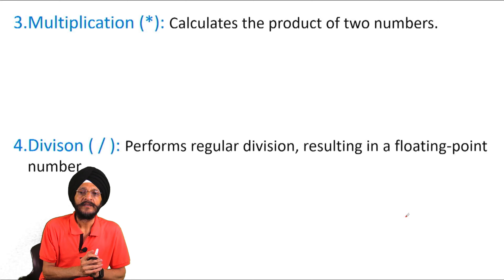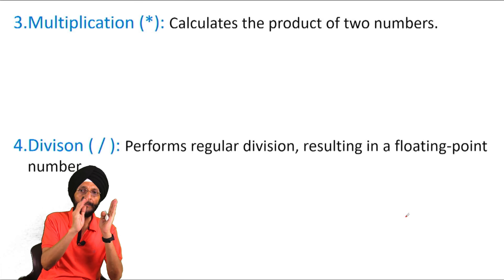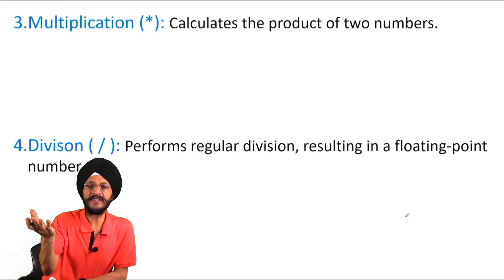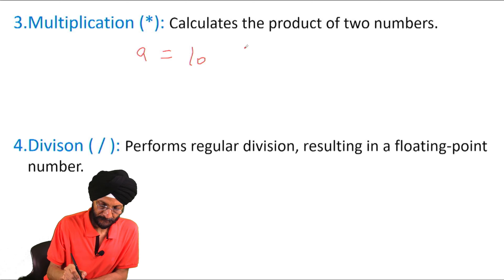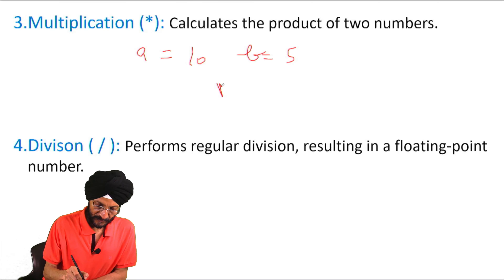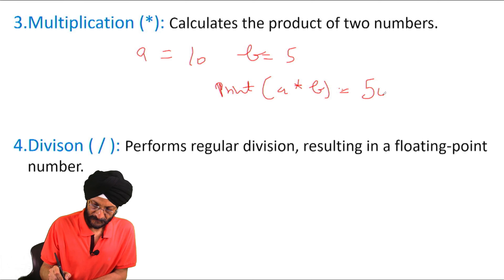Another arithmetic operator is multiplication — here we multiply two values or two numbers. Suppose a is 10 and b is 5. We use the print function with a multiplied by b and the output will be 50.